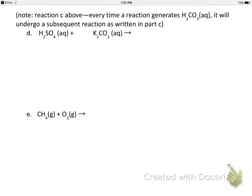Okay, so here we have H2SO4(aq), which is sulfuric acid because it's got an H in it and aq. And then we also have this compound, which is potassium carbonate.